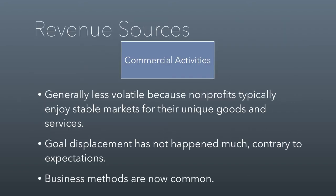This last source, commercial activities, is when nonprofits sell goods or services. This is generally a less volatile source because nonprofits typically enjoy stable markets — whatever they're providing is usually a market where they can rely on regular repeat customers. Goal displacement, interestingly enough, has not really happened. Contrary to expectations, during the decades in which nonprofits were increasingly relying on commercial activities, a lot of people worried that marginalized people — low-income, people marginalized because of racial or ethnic background — basically people left out of a normal market economy would be abandoned by nonprofits relying on commercial revenue. But over time that's not been a problem. A lot of nonprofits still carry on vital missions in underserved communities, and relying on commercial revenue helps them do it with more stability and reliability.